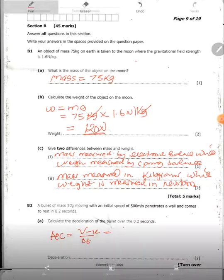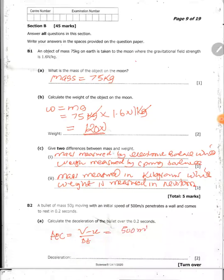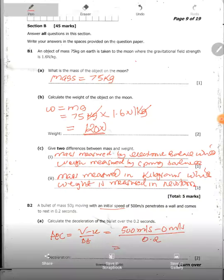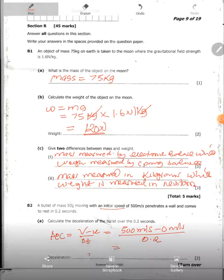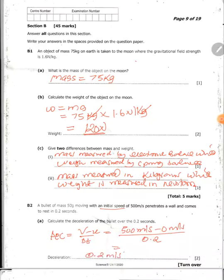So the change in velocity, we have 500 meters per second minus 0 meters per second. Remember, this is the initial speed. Divide by the change in time is 0.2. So therefore, you have 500 divided by 0.2. You have 2,500. So the deceleration is 2,500 meters per second squared.